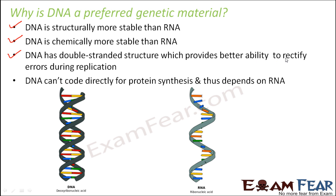DNA has a double-stranded structure which provides a better ability to rectify errors during replication. Both DNA and RNA are capable of replicating themselves, but there are chances that errors might occur during copying. When making a copy of DNA, you need to ensure all bases are correctly copied — even one A replaced with a G can make a huge difference. DNA has a proofreading mechanism that works better due to its double-stranded structure, and this mechanism is missing in RNA.